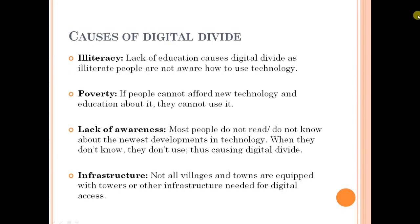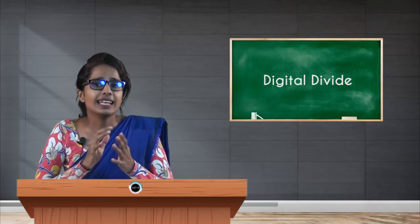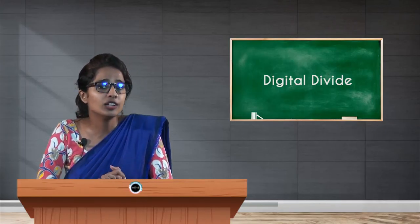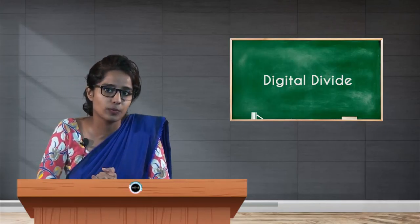The second reason for digital divide is basically poverty. If there is a part of the population which cannot afford new technology — if they cannot afford to buy computers, cell phones, or even hire help to utilize the technology — it means that they are contributing to digital divide. Poverty is another reason in India which has caused digital divide and kept a part of the population out of the progress pace.